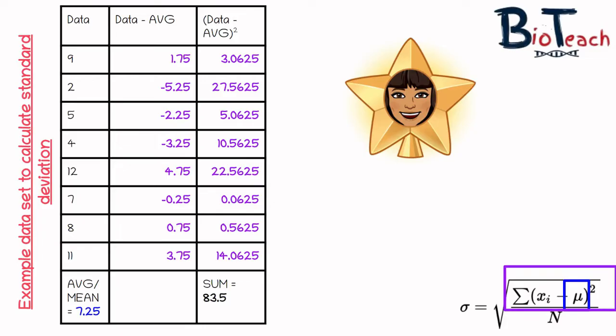Squaring basically eliminates those minus numbers from the previous column, and after I've done the squares of each of those data points, I simply add them all together to get the sum. This completes the top part of the standard deviation method, which looks at the sum symbol.